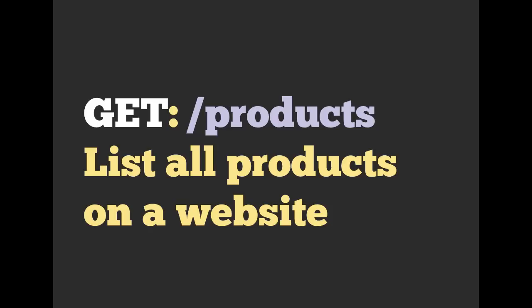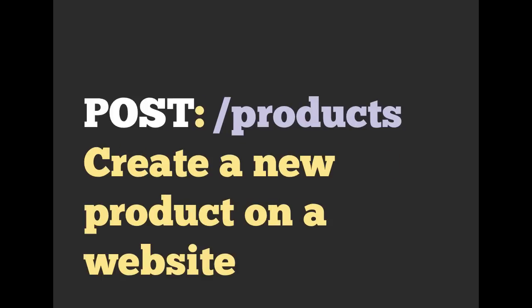If we used our GET HTTP verb on the URL /products, generally we're going to be asking for products — we're saying 'hey server, I want products,' so the server would probably list all the products on a website. If you turned around and used the exact same URL, /products, but with a POST request instead, then likely we are sending data to our server and the server would create a new product for our website. That's a quick introduction into REST and RESTful routes.